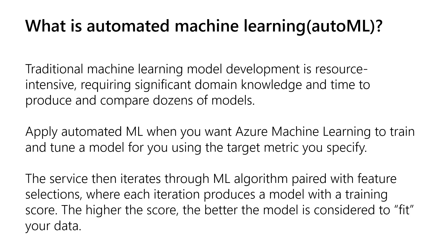Traditional machine learning model development is resource intensive, requires significant domain knowledge and time to produce and compare dozens of models. With applied Automated ML, when you want Azure Machine Learning to train and tune a model for you using the target metric you specify, the service iterates through ML algorithms paired with feature selection, where each iteration produces a model with a training score — the higher the score, the better the model fits your data. With automated machine learning, you will accelerate the time it takes to get production-ready ML models with great ease and efficiency.